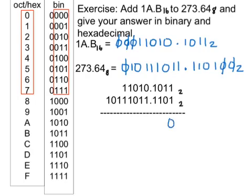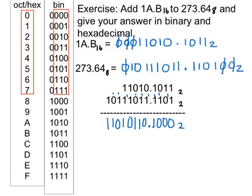Adding the two binary numbers together: put down 0 carry 1; 1 plus 1 is 2, put down 0 carry 1; 1 plus 1 is 2, put down 0 carry 1; 1 plus 1 plus 1 is 3, put down 1 carry 1. Put in the fractional point. 1 plus 1 is 2, put down 0 carry 1; 1 plus 1 plus 1 is 3, put down 1 carry 1; 1 plus 0 is 1; 1 plus 1 is 2, put down 0 carry 1; put down 1 carry 1; 1 plus 1 is 2, put down 0 carry 1; 1 plus 0 is 1; then put down the 0. And that's the answer in binary.